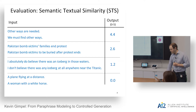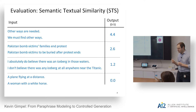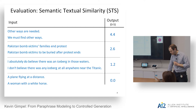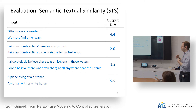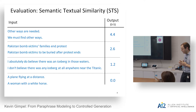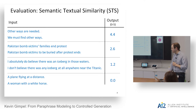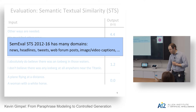For example, 'other ways are needed' and 'we must find other ways' score a high 4.4 similarity. Two sentences about the same news thread but with different agents and predicates score about 2.6. A contradiction — two people expressing opposite beliefs about the same thing — scores lower, though still not zero since they share subject matter. Completely unrelated sentences like one about a plane and one about a white horse score zero similarity.